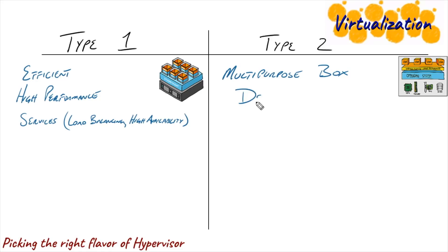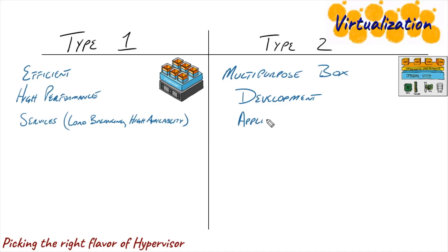Some situations where that multipurpose box really comes in handy include development, where you want to write programs and test them on different operating systems to find bugs and see how things work in different environments — without reinstalling the OS, acquiring spare boxes, or contacting server admins to build VMs. Another main reason for desktop virtualization, or a type two hypervisor, is application support. For example, if you need a particular version of QuickBooks that doesn't work with the latest Windows, you can run a virtual machine with an older version of Windows rather than dedicating a physical machine to it.